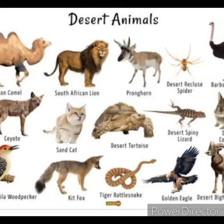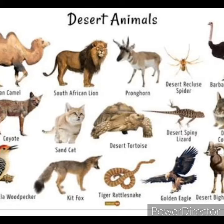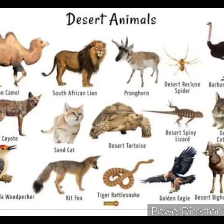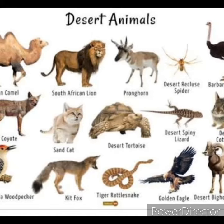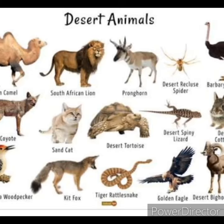Barbary ostrich, sheep, desert bighorn, desert cottontail, desert spiny lizard, zero coal, Arabian oryx, marbled polecat.